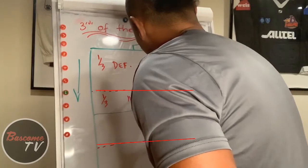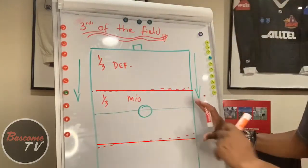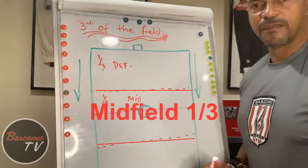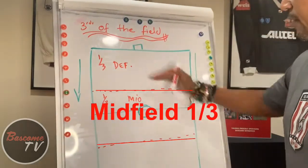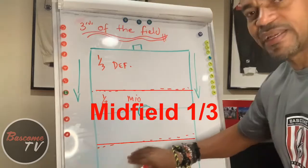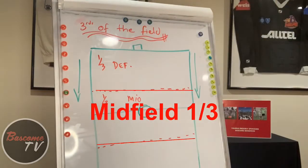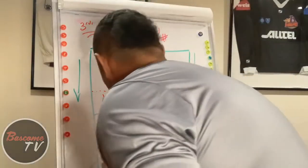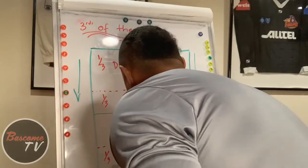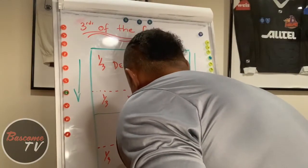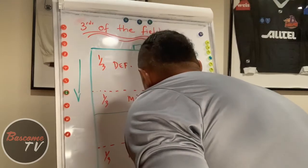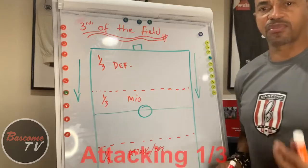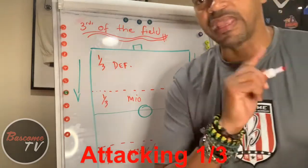This third is the midfield third — it's in the middle of the field. Now, if you've got your defensive third and your midfield third, what can this last third possibly be? That's right — it's going to be your attacking third, or it can also be called your offensive third. It's very important you understand the thirds of the field.